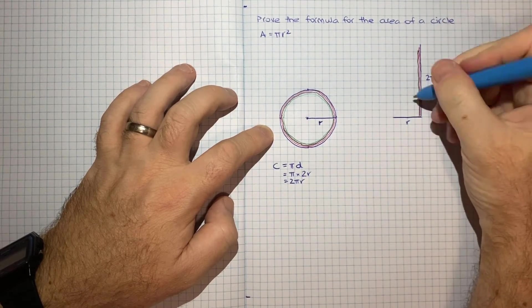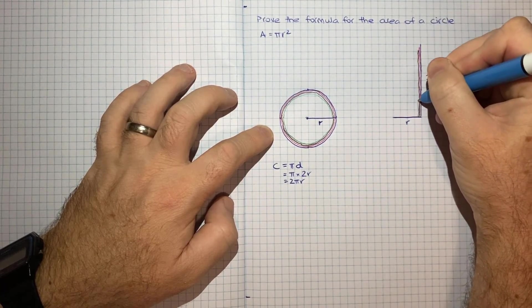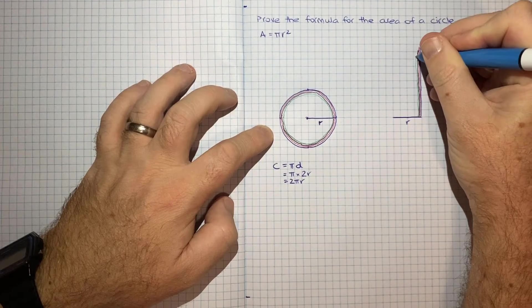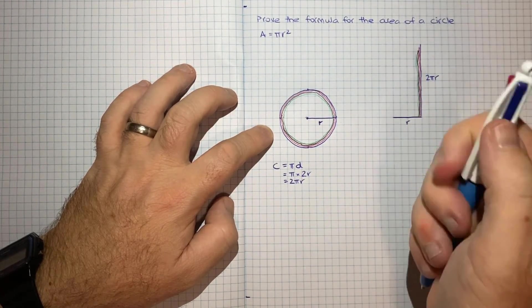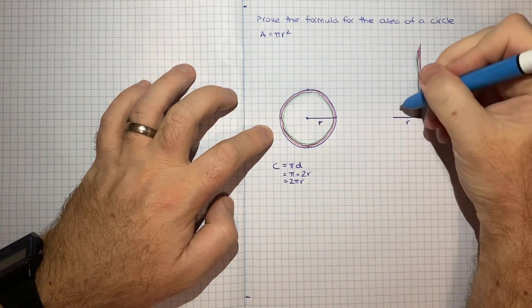And same deal with the next one, and so on and so on. And hopefully you'd see that the pattern you get is essentially a filled in triangle.